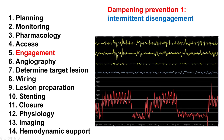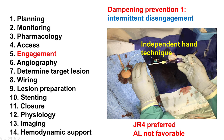Intermittent disengagement is one way to do this. The guide is disengaged, then it's engaged briefly — for example, to deliver equipment down the coronary artery — and then it's disengaged again to allow perfusion to happen in the coronary artery, followed by engagement again. Intermittent disengagement minimizes the degree of ischemia and allows the procedure to proceed.